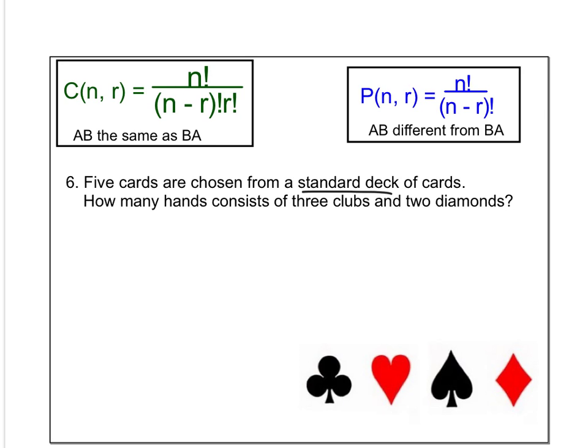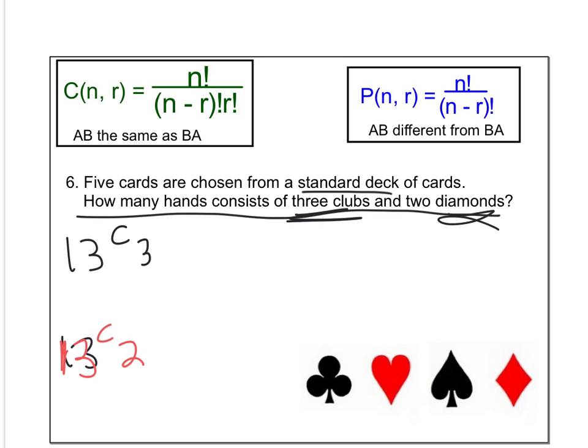So 5 cards are chosen at random from a standard deck of cards. How many hands consist of 3 clubs and 2 diamonds? So you've got clubs and diamonds. Remember, there's 13 clubs and there's 13 diamonds. So you want 3 of them. So out of 13 choose 3. And down here, you want 13 choose 2. It doesn't matter what order you get them in.